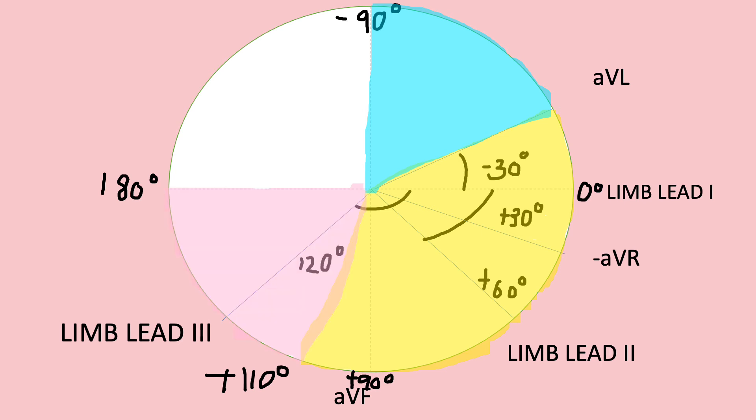Now we move on to the right axis deviation. Right axis deviation would have a value between plus 110 to plus 180 degrees. For extreme cases, there will be in between negative 90 degrees to plus minus 180 degrees. That is for extreme axis deviation.